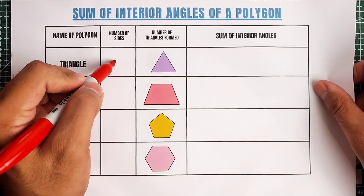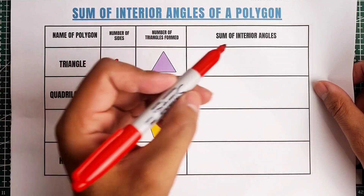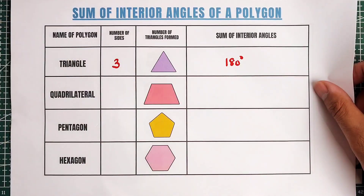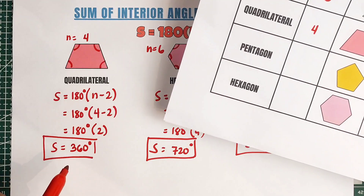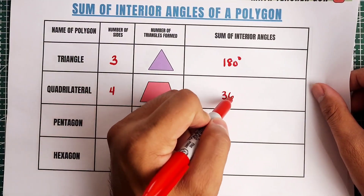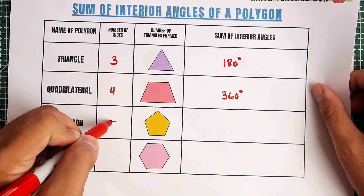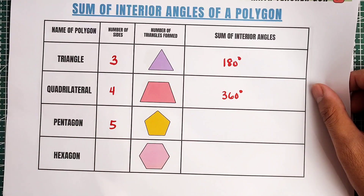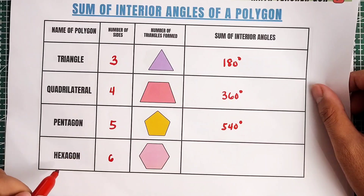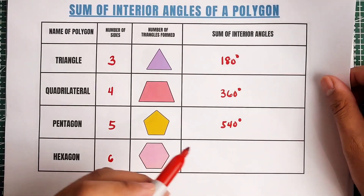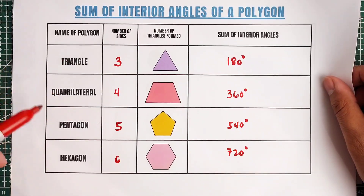When we say triangle, it has three sides. You need to remember that the sum of the three interior angles of a triangle is always 180 degrees. For the quadrilateral, it has 4 sides, and we calculated earlier that the value of S is 360 degrees. Next, pentagon — this is a five-sided regular polygon and its sum of interior angles is 540 degrees. And our six-sided polygon, the hexagon, has a value of 720 degrees. So we are done with triangle, quadrilateral, pentagon, and hexagon.